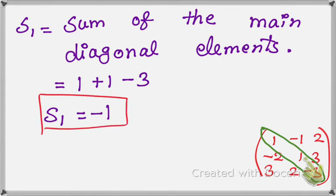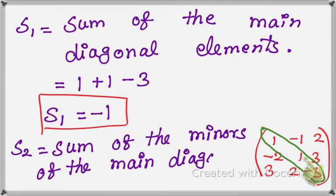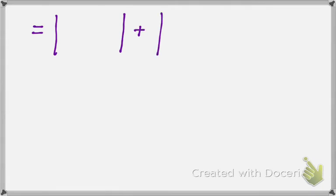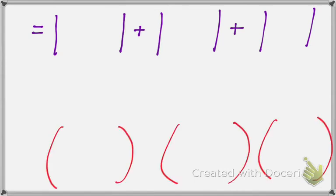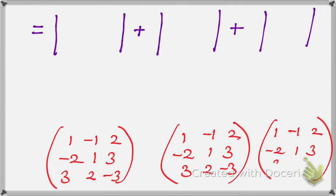Next, S2 equals the sum of the minors of the main diagonal elements. We are going to find the minors of the main diagonal. In rough work, write the same matrix three times. The main diagonal elements are 1, 1, and minus 3. For each diagonal element, we delete its entire row and column and take the remaining 2×2 submatrix.